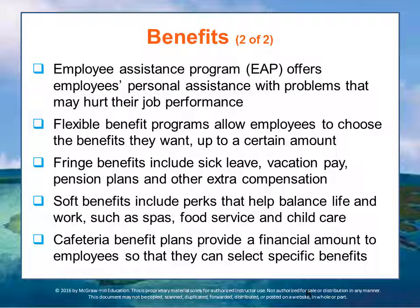Fringe benefits include things like sick leave, vacation pay, pension plans, health plans, and other extra compensation. Soft benefits include perks that help balance life and work, such as on-site child care, spas, food service, laundry services, and hair salons. Cafeteria benefit plans provide a financial amount to employees so they can select specific benefits that fit their needs — the idea being that, like a cafeteria, you go and select what you want. The key is making benefits flexible rather than giving employees identical benefits, and as firms go global, cafeteria-style flexible benefit plans can become even more important.